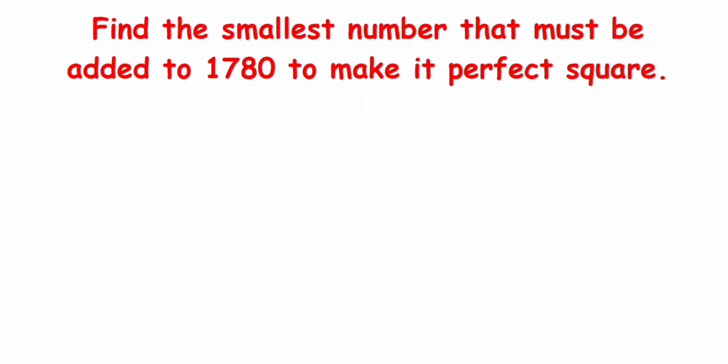This is quite an important problem. Here in this question, 1780 is not a perfect square and we have to make it perfect square. So this can be done by long division. Here I have taken a division and inside this division I'm going to write down the number 1780.